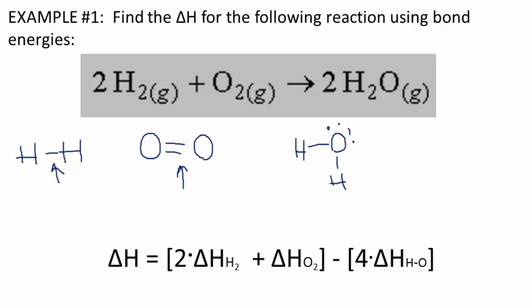So the formula looks like this. The bonds broke—we're breaking two hydrogen-hydrogen bonds, and we're also breaking two oxygen-oxygen bonds. And then we're forming four hydrogen and oxygen bonds.